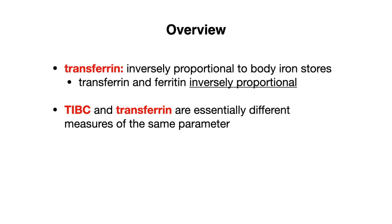If you think about it, this is because if iron stores are low, such as in an iron deficiency state, the body is going to try to compensate by increasing transferrin to facilitate iron absorption. The second principle to keep in mind is that the total iron binding capacity, or TIBC, and transferrin are essentially the same parameters, so they are going to move in the same direction. We're going to group these together because it's so much easier to understand the iron studies this way.